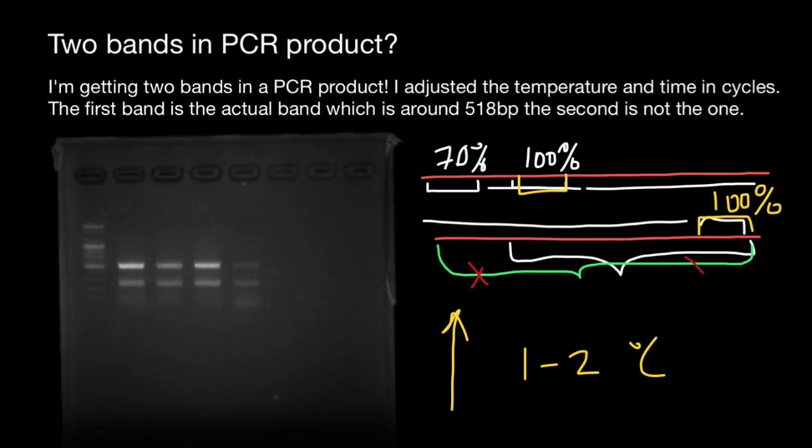The second advice would be to reduce the concentration of your primers. You can actually do both: raise annealing temperature during PCR cycle and decrease concentration of your primers.